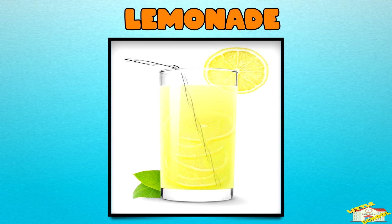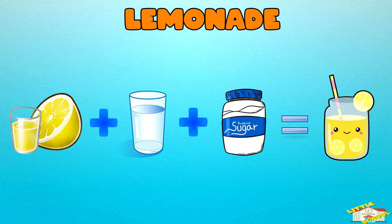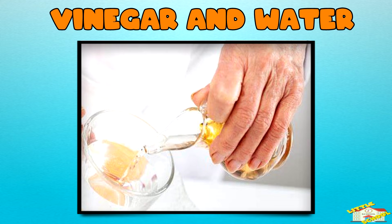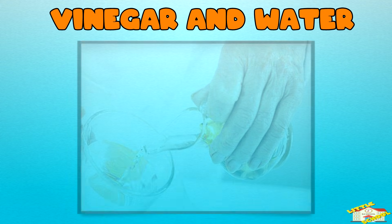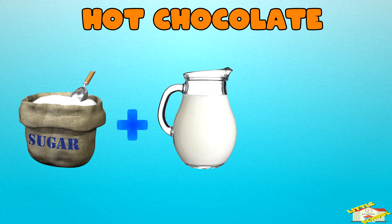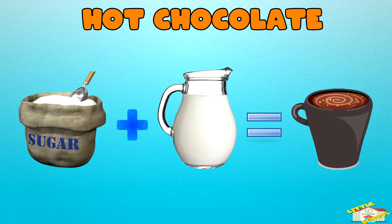Lemonade — when you mix lemon juice, water, and sugar, it becomes a uniform drink. Vinegar and water — these two liquids mix together completely, so you can't tell them apart. Hot chocolate — when you mix cocoa powder, sugar, and warm milk, it dissolves to make one smooth drink.